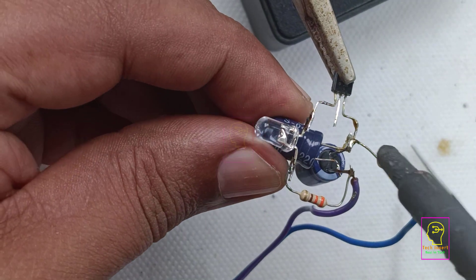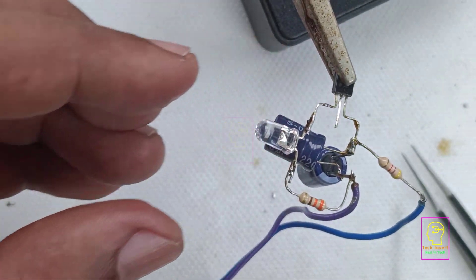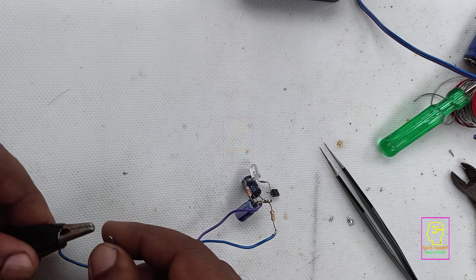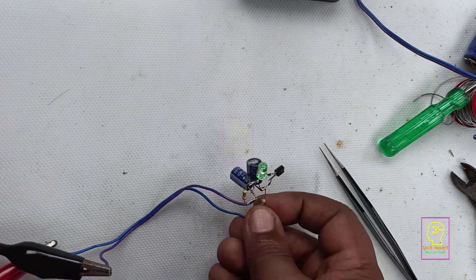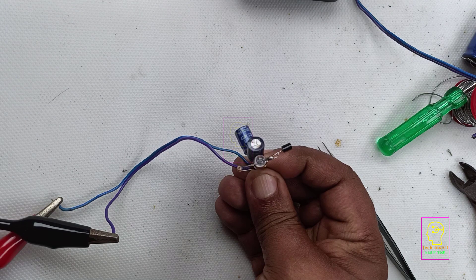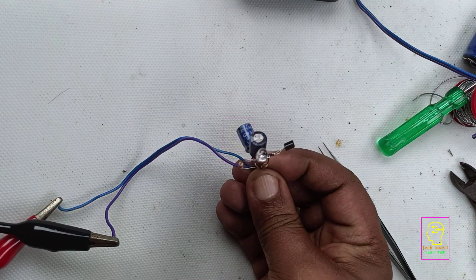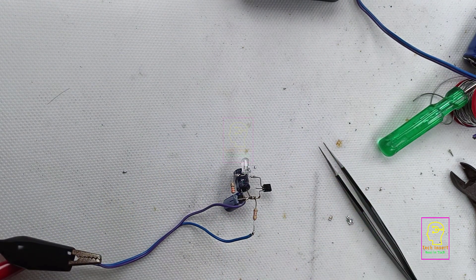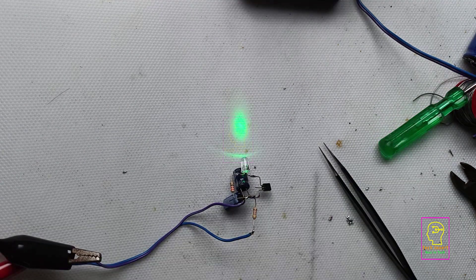You can change the capacitance according to your wish. The more the capacitance the less the flashing rate. Now you can see the flashing rate which is very less. I believe this is more beautiful than the previous one. I will switch off the studio light so that the brightness of the LED is clearly visible.